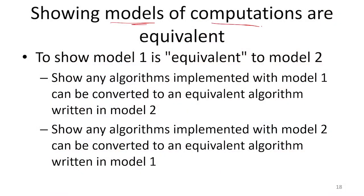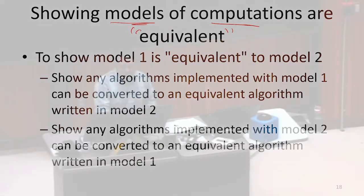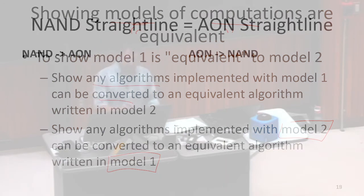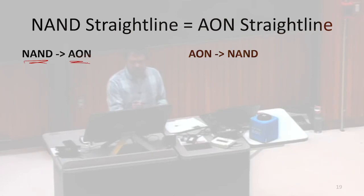If I have two models of computation, and I want to show that they are, in this sense, equivalent, that they can compute the same functions, I need to do two things. I need to show that any process or algorithm that I can implement with Model 1 can be converted to Model 2, and I need to show that anything implemented with Model 2 can also be converted back to Model 1. One of these directions has already been done for us. We can convert NANDs to ANDs, ORs, and NOTs. We saw this already. So this one is done.